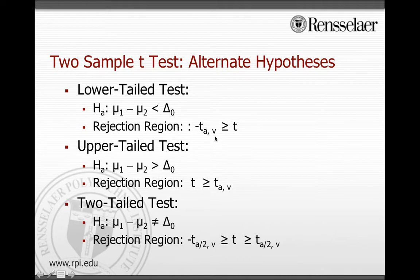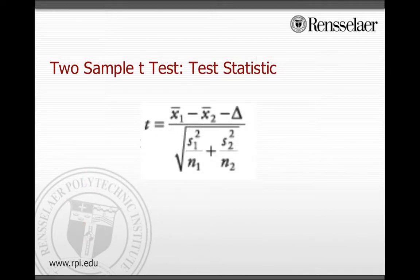What changes is the test statistic. Now, instead of using the population parameters, it uses point estimators calculated from the sample. Again, the sample means of both data sets and the sample standard deviation.